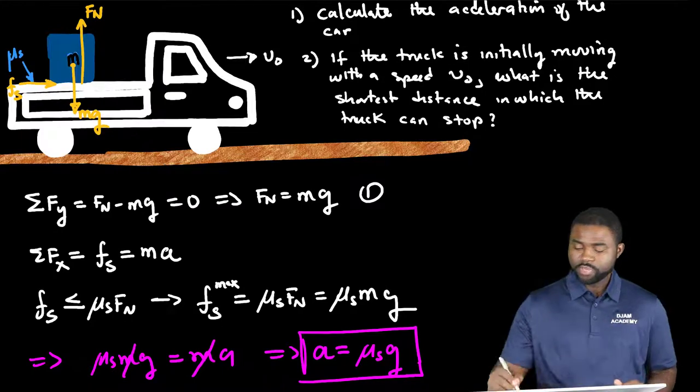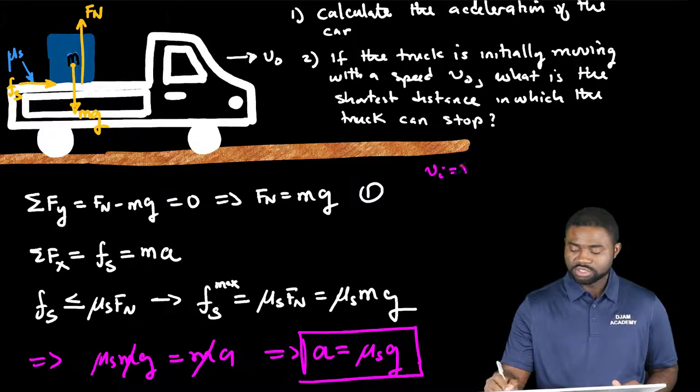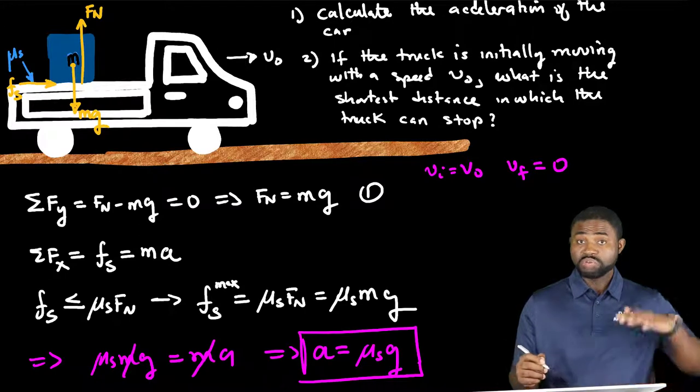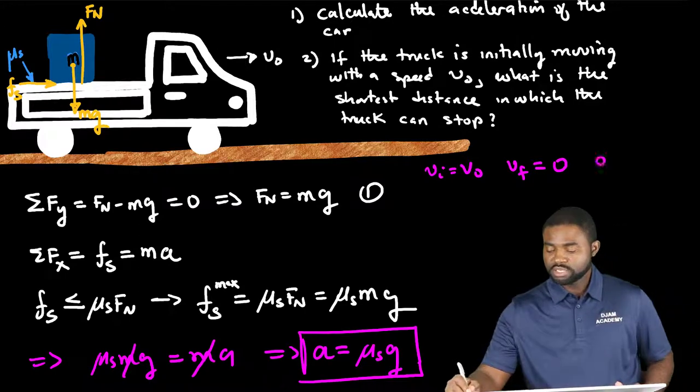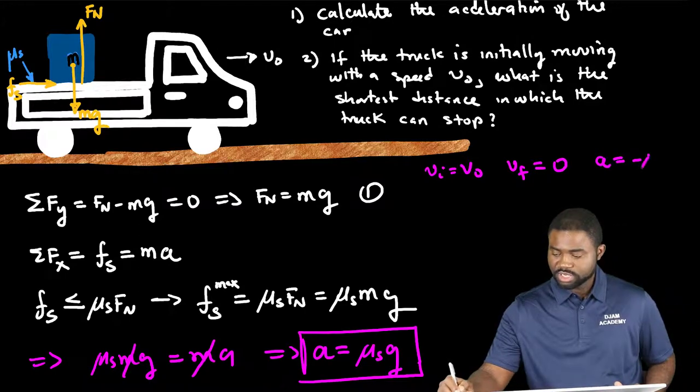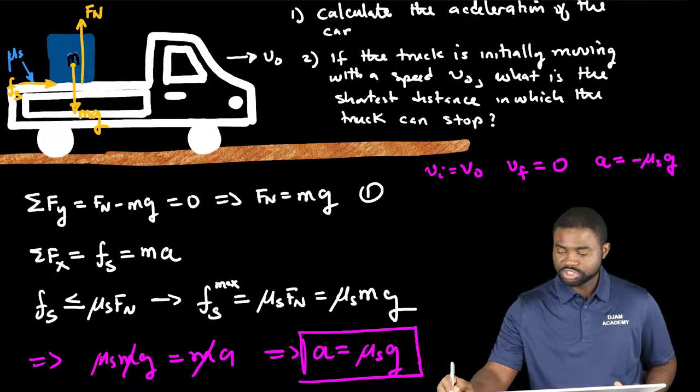Here's the thing: v initial is equal to v knot, v final is equal to 0. When the brakes are applied, the acceleration is equal to negative mu s g.